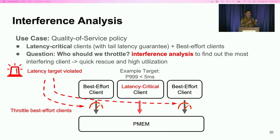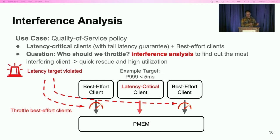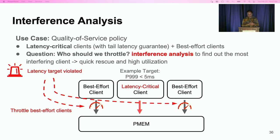The interference analysis mechanism is used to answer: who should we throttle? We can conduct interference analysis to find out who is causing the most interference to the latency-critical client we care about, and then we can throttle that client. By doing this, we can quickly save the latency-critical clients as well as achieve high system utilization.